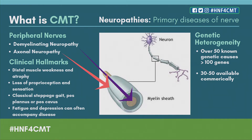Over the years we've learned that you can separate different types of CMT based on where the problem starts. If the problem starts in the myelin insulation around the peripheral nerves, we typically call this CMT type 1. If the problem starts with the nerve fiber itself — the axon — we call that CMT type 2. This has been known for many years, even before the genetic revolution.